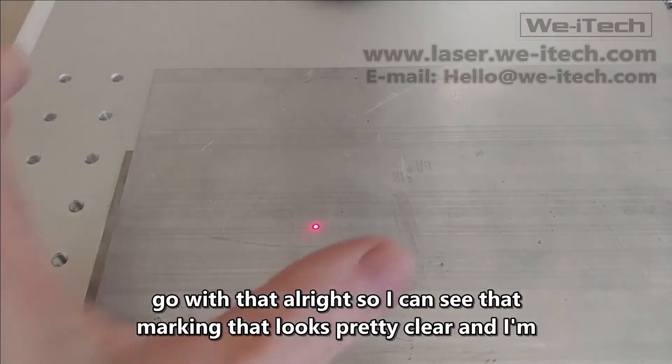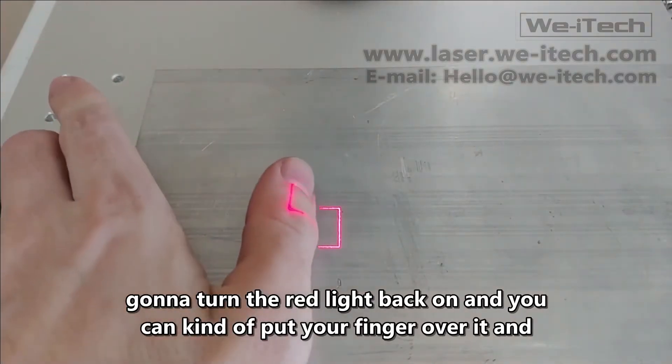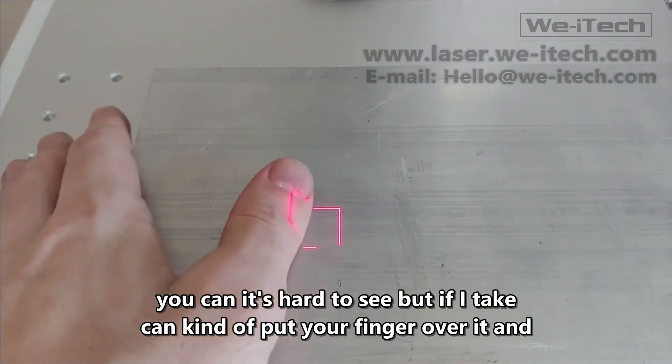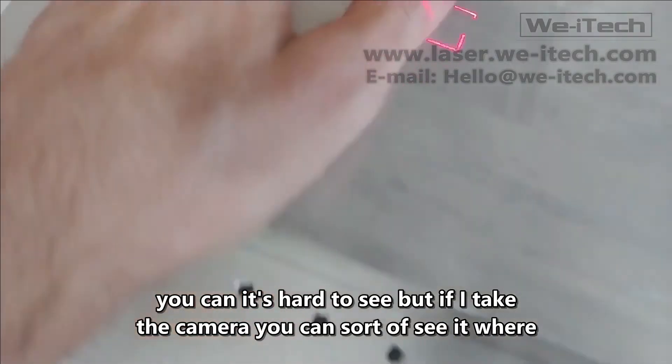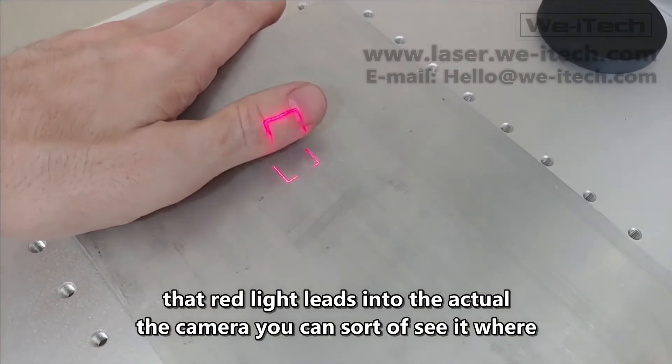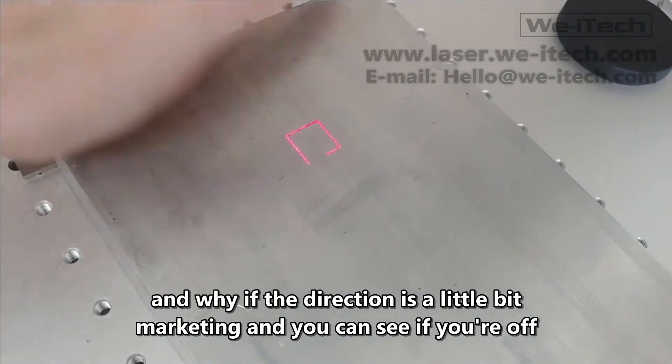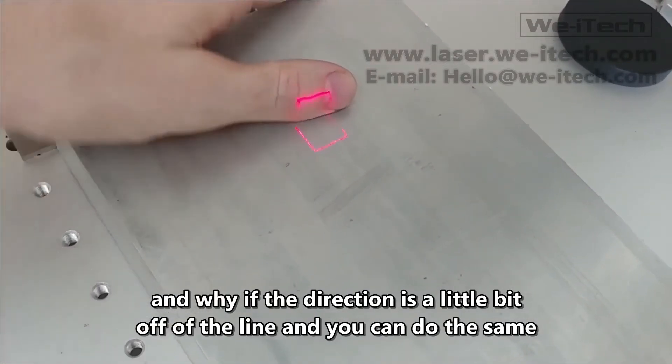Okay, let's go with that. All right, so I can see that marking. That looks pretty clear, and I'm going to turn the red light back on, and you can kind of put your finger over it. It's hard to see, but if I take the camera, you can sort of see where that red light leads into the actual marking, and you can see if you're off in Y if the direction is a little bit off of the line, and you can do the same in X.